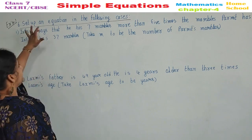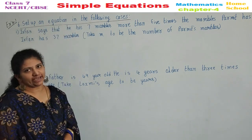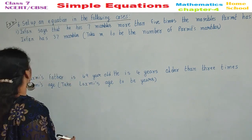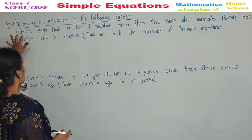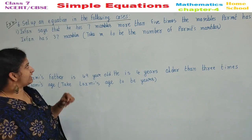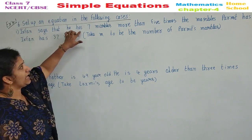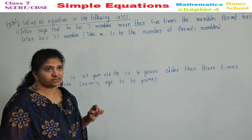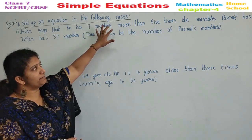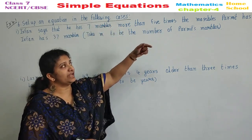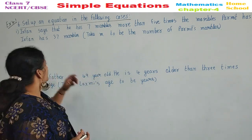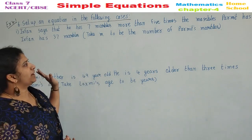The next main: set up an equation in the following cases. Read the verbal problem and try to frame the equation. First sub-question: Irfan says that he has 7 marbles more than 5 times the marbles Parmit has. Irfan has 37 marbles. Take M to be the number of Parmit's marbles.